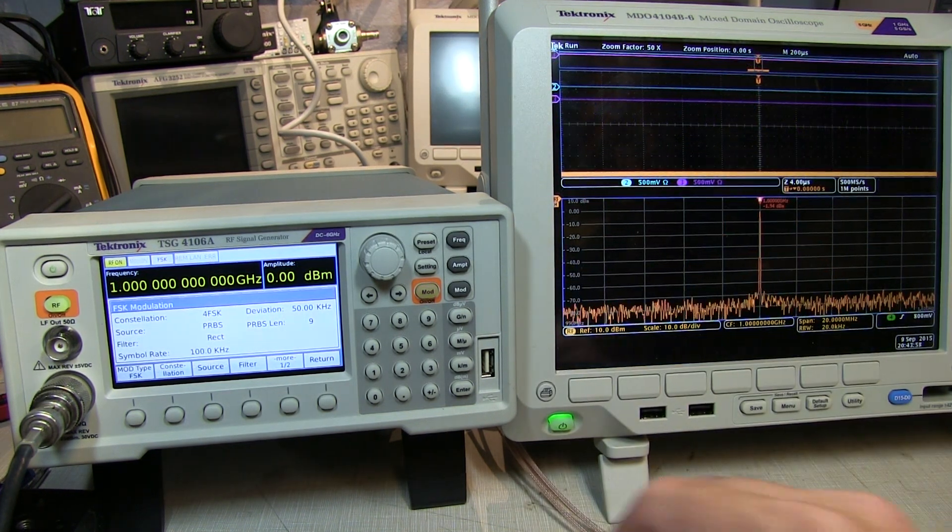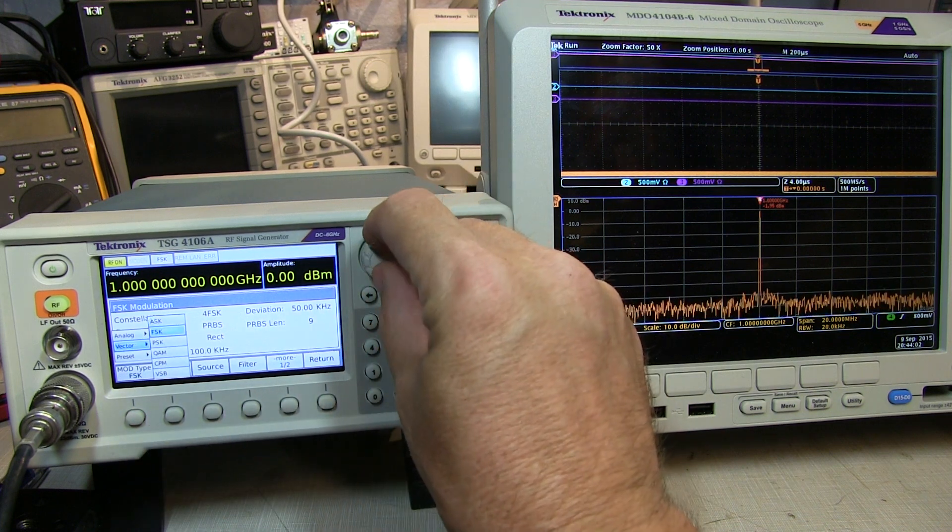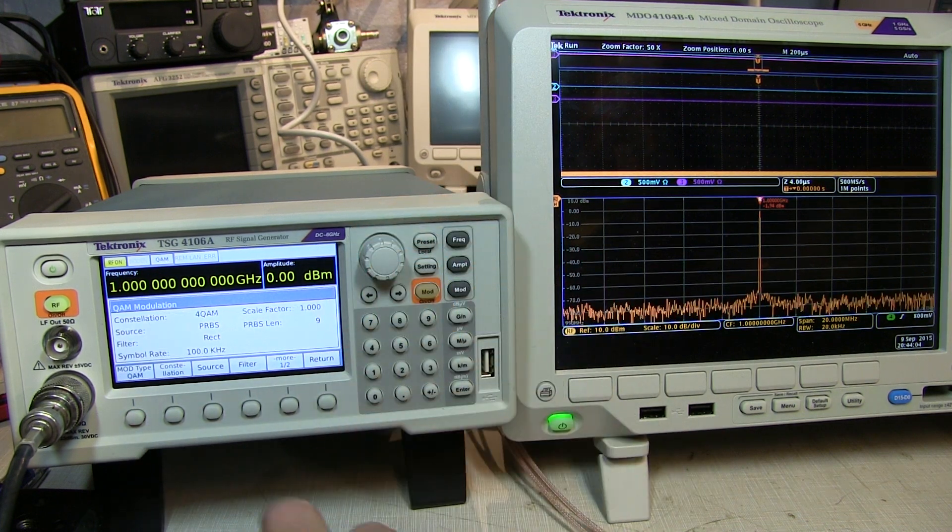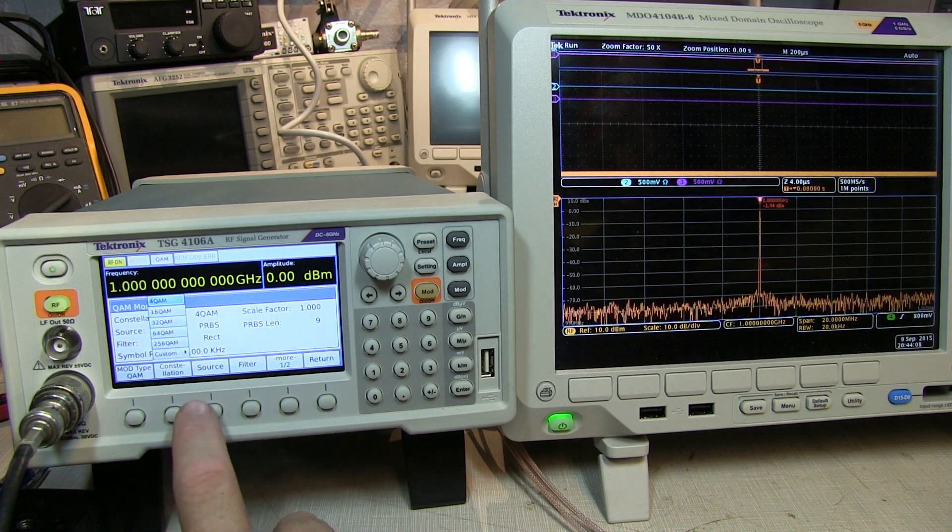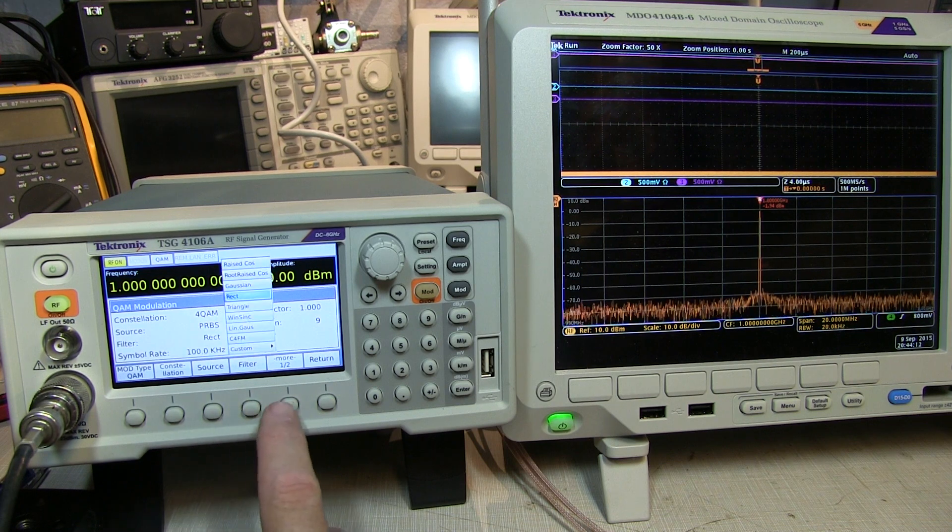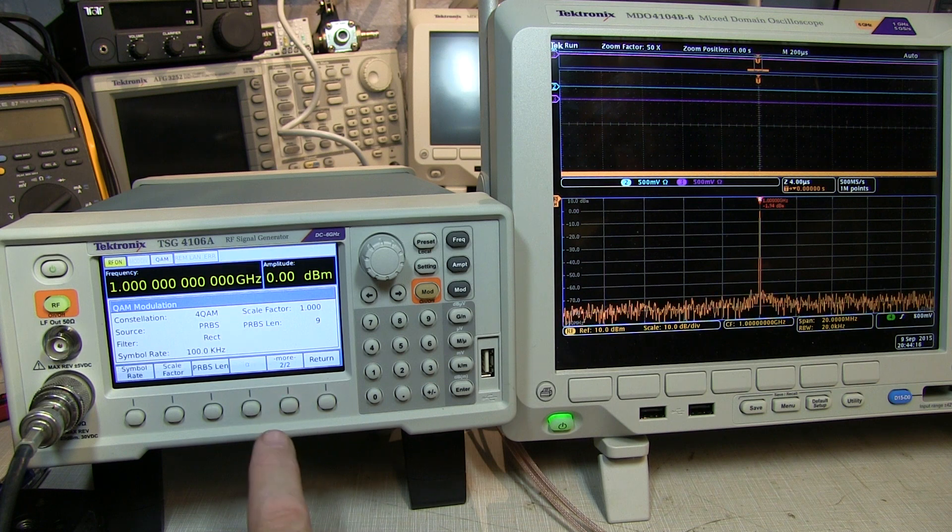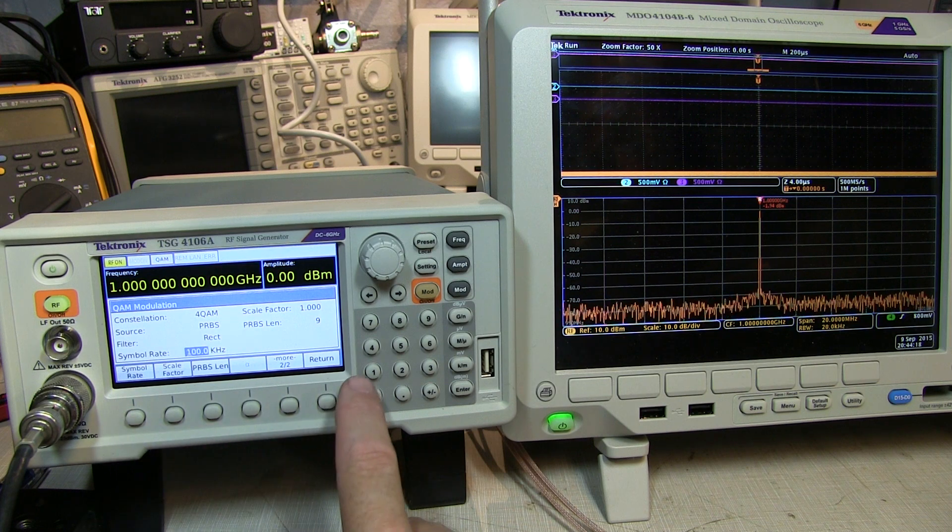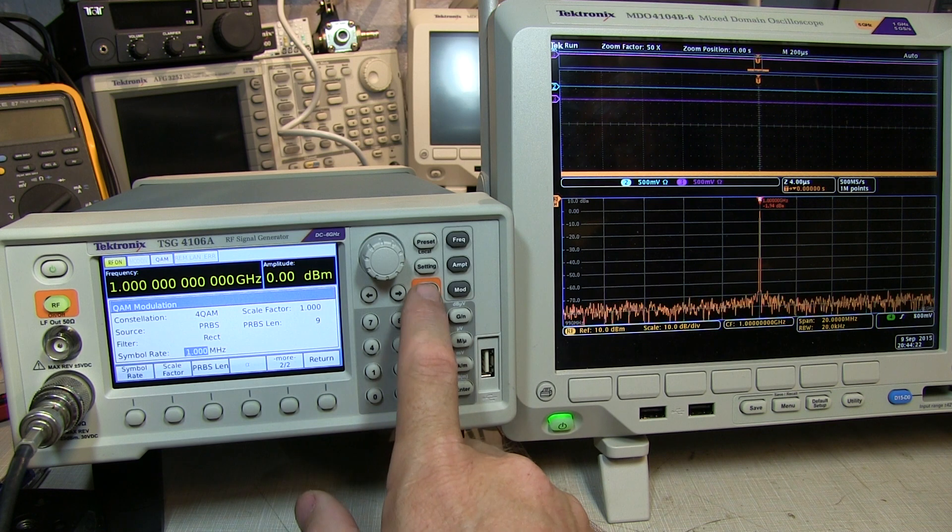Let's switch over to a QAM type modulation. So let's pick vector, and let's pick QAM modulation, and we'll use a QPSK or a 4QAM, and we'll still use a PRBS pattern, leave a rectangular filter so the phase changes are nice and snappy. It's going to occupy a lot of bandwidth, but that's okay. Let's set the symbol rate to one mega symbol per second. And let's turn the modulation on.